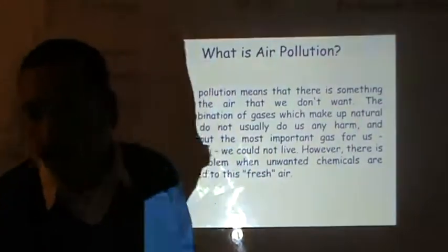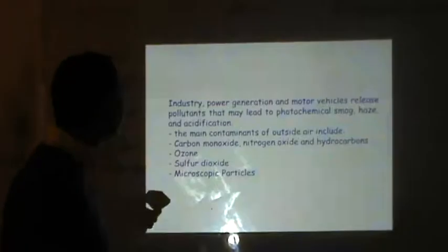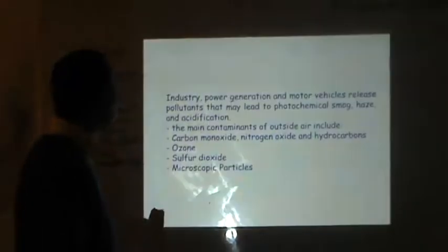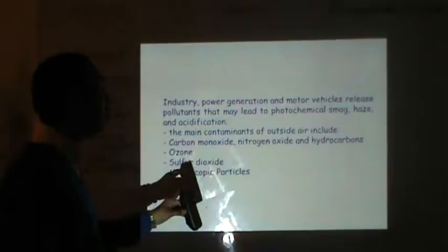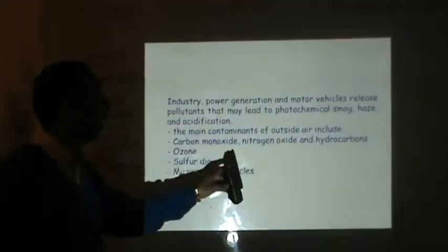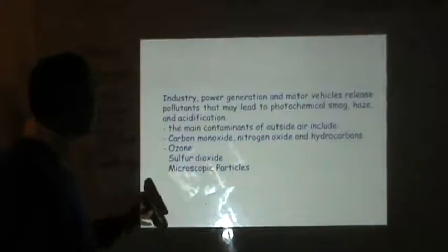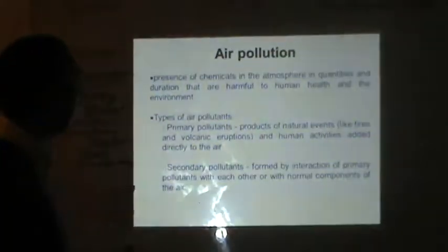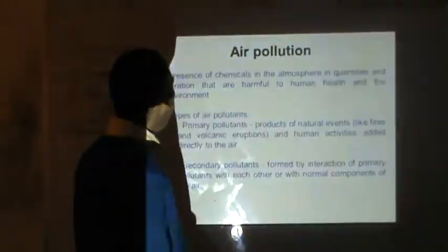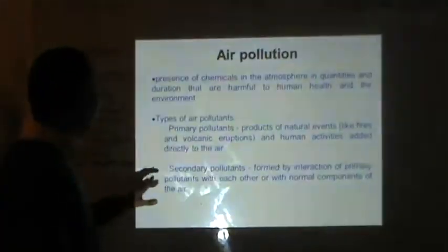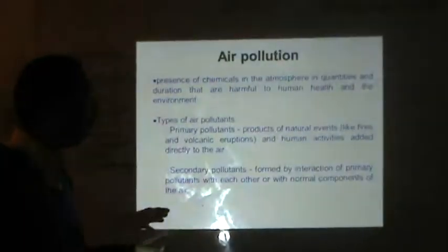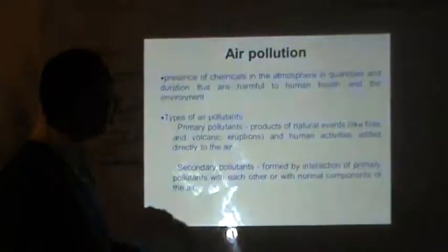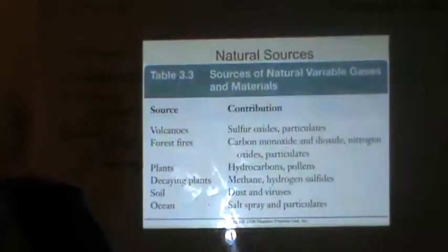Industry, power generation, and motor vehicles release pollutants that lead to photochemical smog, haze, and acidification. The main contaminants include carbon monoxide, nitrogen oxides, hydrocarbons, ozone, sulfur dioxide, and microscopic particles. Primary pollutants are products of natural events like fires and volcanic eruptions, as well as human activities added directly to the air. Secondary pollutants are formed by the interaction of primary pollutants with each other — smog is one example.